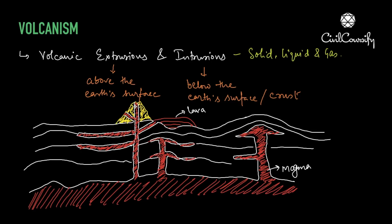When lava comes out of the surface it goes through a cooling and solidification process - this is the extrusion process. The intrusion process, where magma stays inside the earth's crust, results in intrusive rocks, also known as plutonic rocks. As you can see in the diagram, these two are sills.